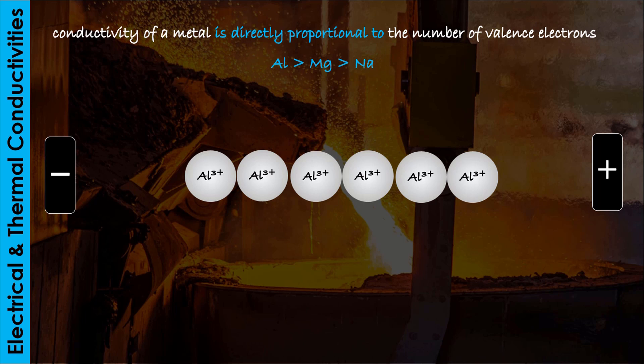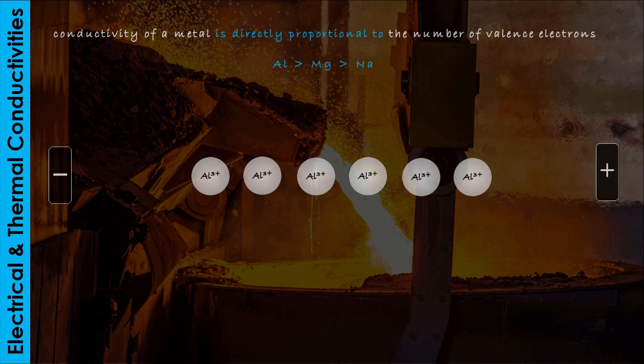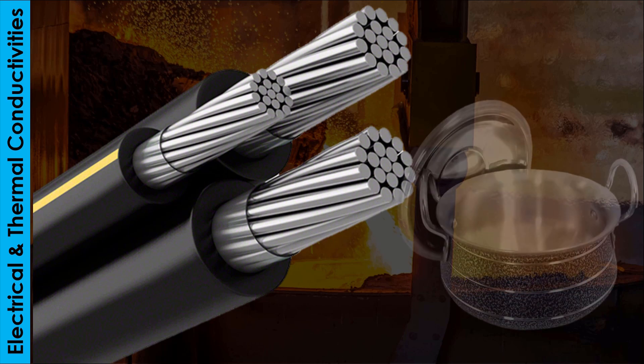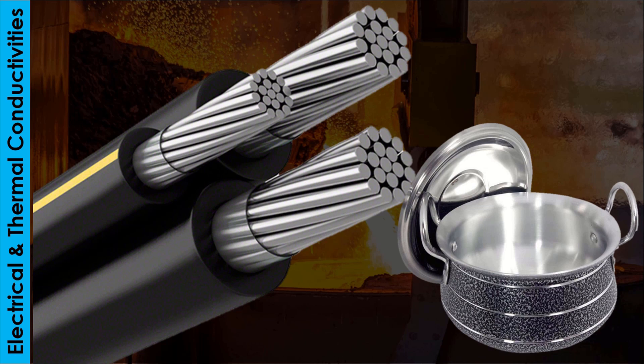The high electrical conductivity of aluminum, along with its low density, is why it is used for making overhead electric cables, while its high thermal conductivity is why it is used for making cooking pots, frying pans, and kettles.